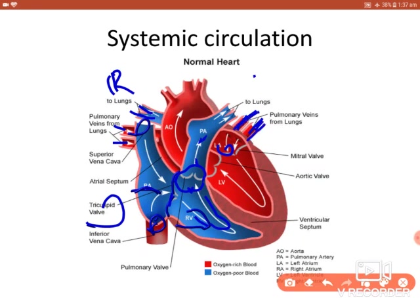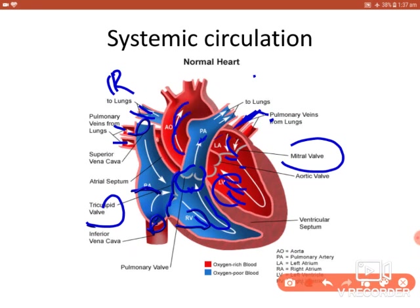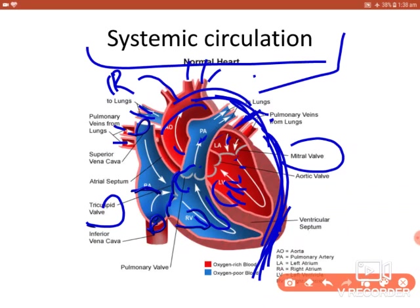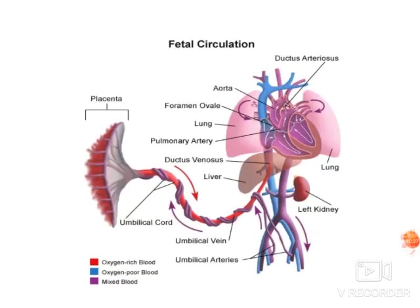The oxygenated blood enters the left atrium through the right and left pulmonary veins. From the left atrium, the oxygenated blood enters the left ventricle through the mitral valve. From the left ventricle, it enters the arch of the aorta through the aortic valve. Branches supply the head, neck, and upper limbs. The descending thoracic aorta continues as the abdominal aorta, which divides into the common iliac, external, and internal iliac arteries, supplying the lower extremities.